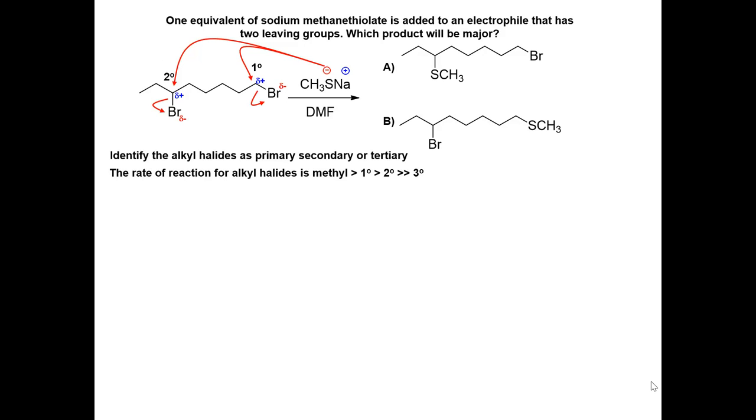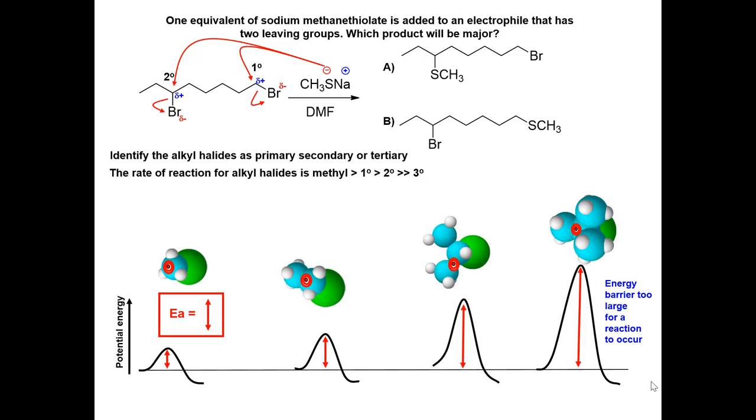The general trend for the rate of reaction of a nucleophile on an alkyl halide is: methyl is the fastest, then primary, secondary, then tertiary alkyl halide. This is because of the steric interaction.